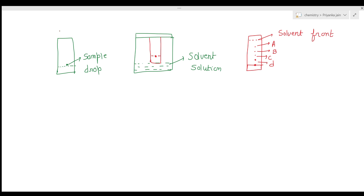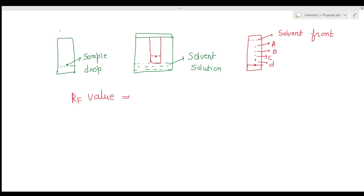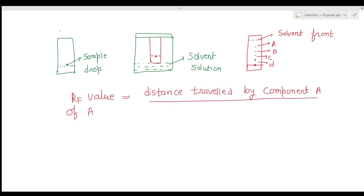This technique is similar to thin layer chromatography, except here we use a paper strip instead of a glass strip. Once components are separated, we measure the distance traveled by each component and the distance traveled by the solvent front. The RF value of component A equals the distance traveled by component A divided by the distance traveled by the solvent.